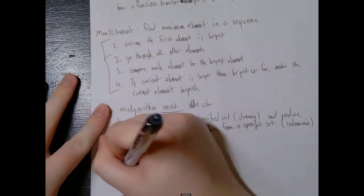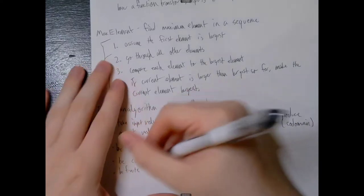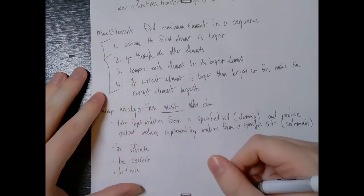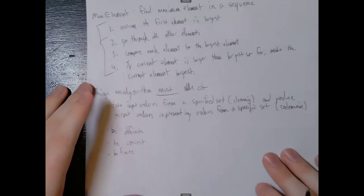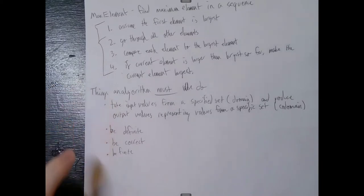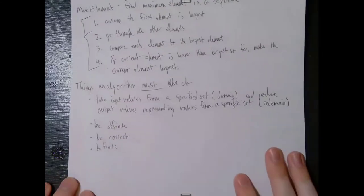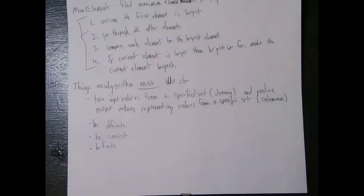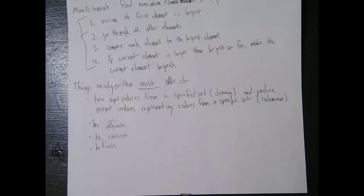It must be finite, which means it must be able to produce output in a finite number of steps. The simplest way to think about that is it must not infinite-loop. You'll talk more about how to prove that an algorithm is finite in classes like 349. But basically, you must be able to produce the output in a finite number of steps for every single possible input.